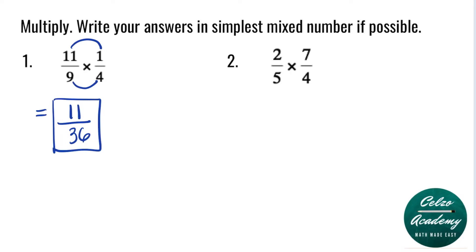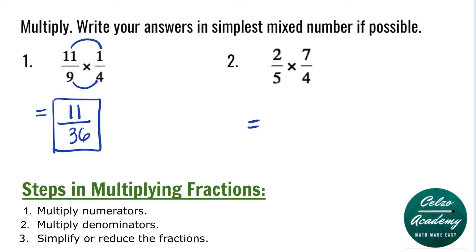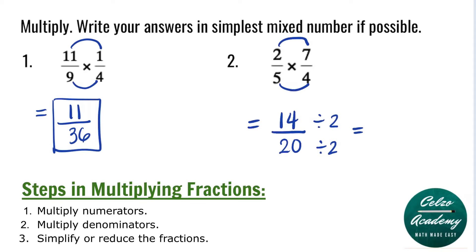Question number 2: 2 fifths times 7 over 4. Step 1 is to multiply the numerators 2 and 7 — that's 14. Step 2, multiply the denominators 5 and 4, and that is 20. Now let's simplify 14 over 20. The number 2 can divide both 14 and 20: 14 divided by 2 is 7, and 20 divided by 2 is 10. So 7 over 10 is the simplest answer.